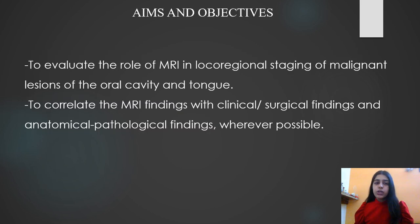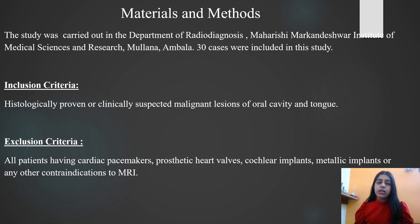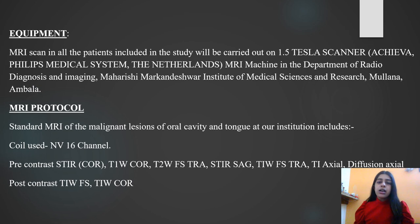The aims and objectives are to evaluate the role of MRI in loco-regional staging of malignant lesions of oral cavity and tongue, and to correlate these findings with clinical, surgical, anatomical, and pathological findings. The study was carried out in the Department of Radiodiagnosis at Maharshi Markandeshwar Institute. 30 cases were included. The inclusion criteria was any histologically proven or clinically suspected malignant lesion of oral cavity and tongue; patients with contraindications to MRI were excluded. The study was carried out on a 1.5 Tesla MRI machine.